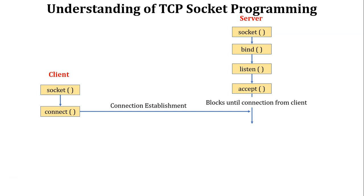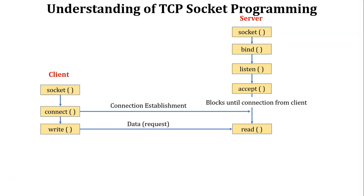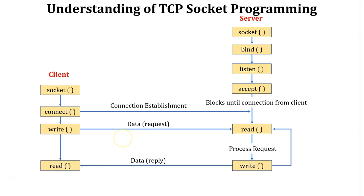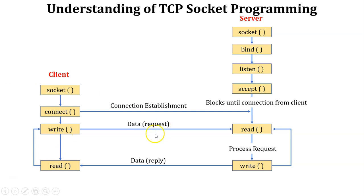After the connection is established, the next process is data transfer. We write read/write or send/receive functions at both the client and server side. The client sends a request to the server; the server receives and reads that request, processes it, and uses the send or write function to send a reply to the client. The client then receives the reply. If the client wants to send another request, this process repeats. After exchanging data, both client and server use the close function to close the socket. This is the flow of a TCP socket program.